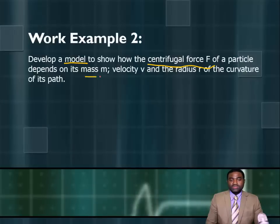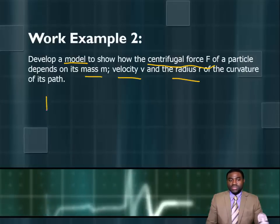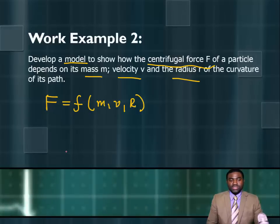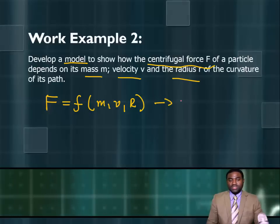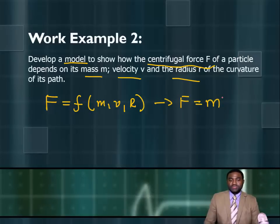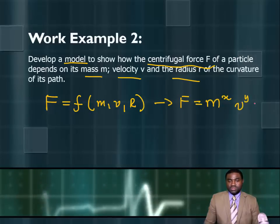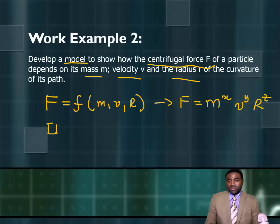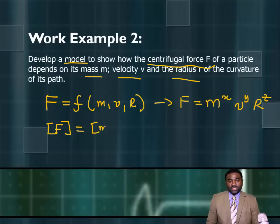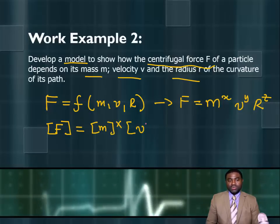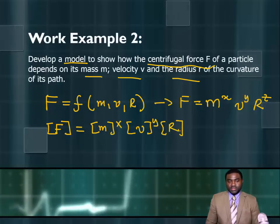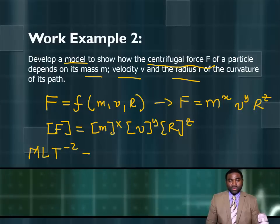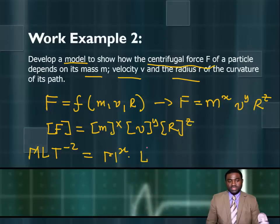Let's look at another example. We are to develop a model that shows how the centrifugal force of a particle depends on mass, velocity, and radius of a circular path. The centrifugal force is a function of mass, velocity, and radius, so F equals M raised to the power X, V raised to the power Y, and R raised to the power Z. The dimensions of force, M L T minus 2, equal the dimensions of mass to the X, velocity to the Y, and radius to the Z.